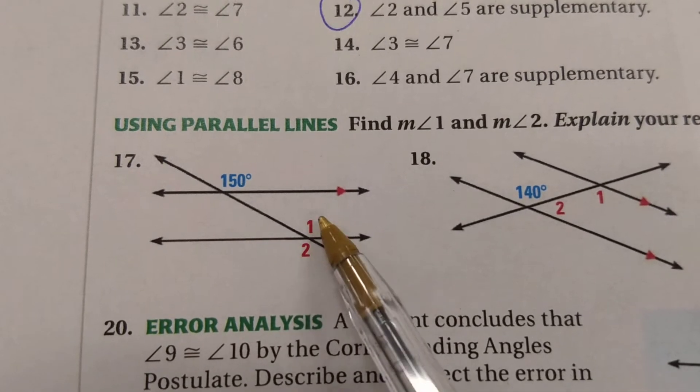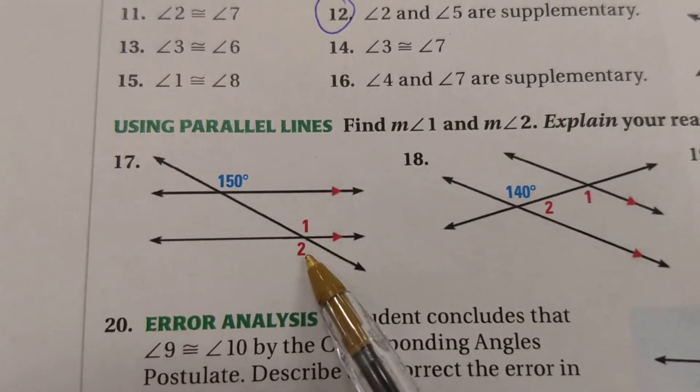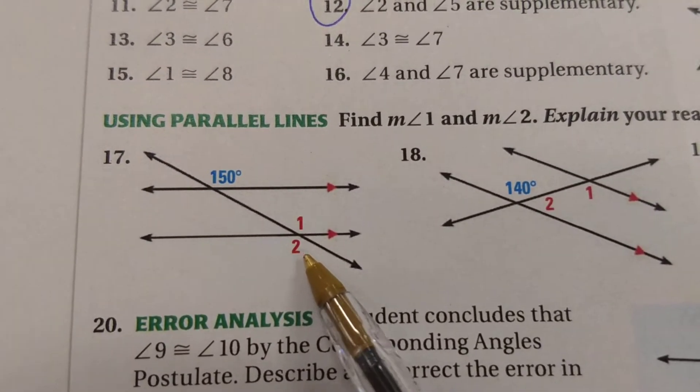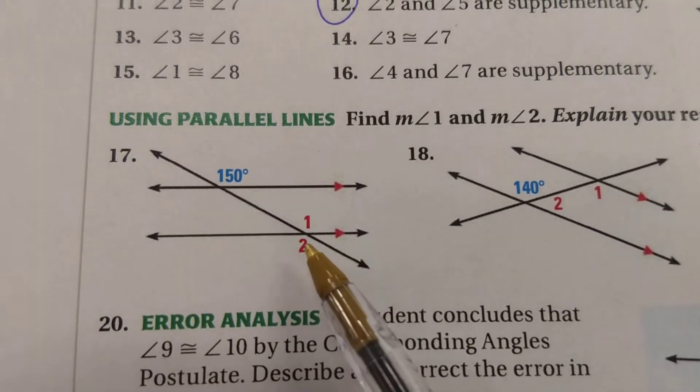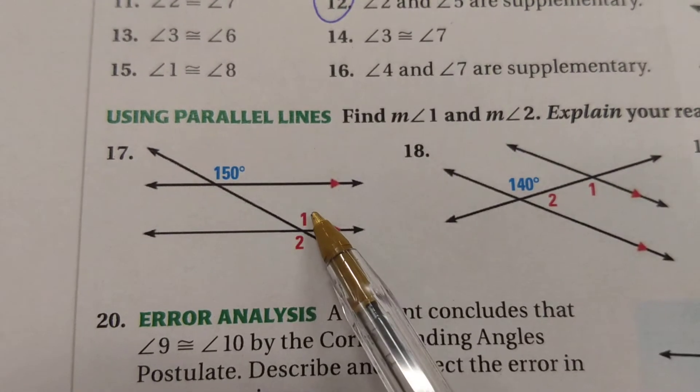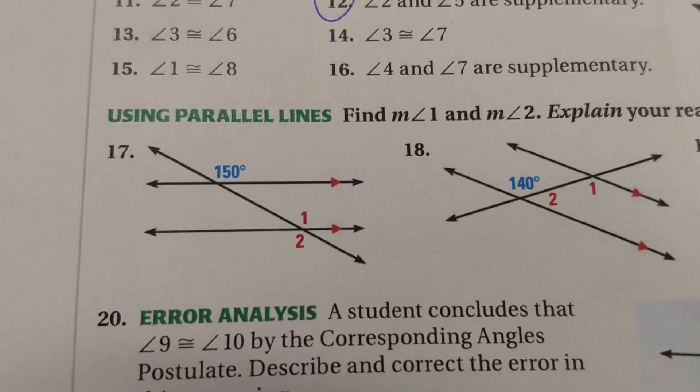One thing that I noticed immediately is that 1 and 2 are vertical angles. So if I can find angle 1, I already know what angle 2 is. Or if I can find angle 2, I know what 1 is. They've got to be the same because they're vertical angles.